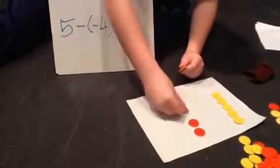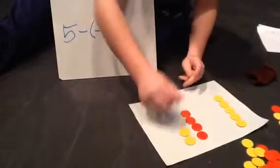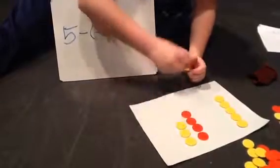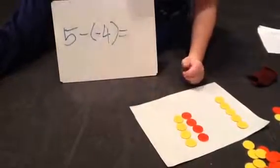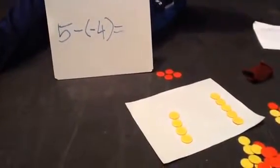Remember how I said those two chips, negative plus positive equals zero? Well now, if you take away negative four, it should equal nine.